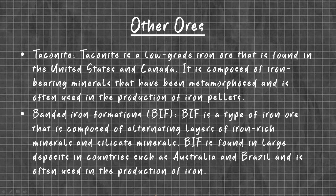Banded iron formations, also called BIF, is a type of iron ore composed of alternating layers of iron-rich minerals and silicate minerals. BIF is found in large deposits in countries such as Australia and Brazil, and is often used in the production of iron.